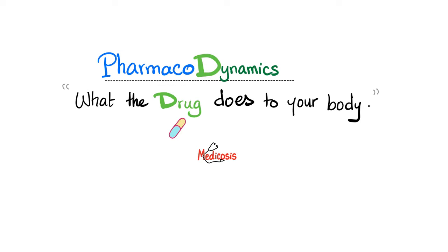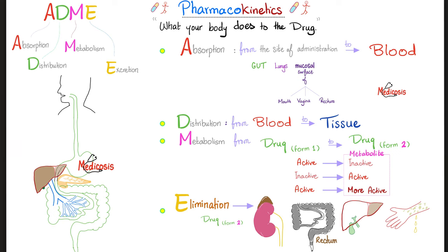Pharmacodynamics is the opposite — it's what the drug does to your body, not what your body does to the drug. Pharmacokinetics is what your body does to the drug: Absorption, Distribution, Metabolism, Elimination.